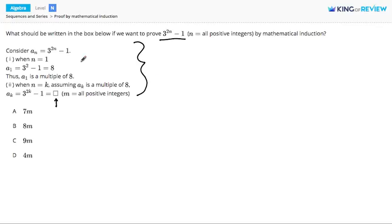So first, we have 3 to the 2n minus 1 defined as a sequence a_n, and then we start the induction process.